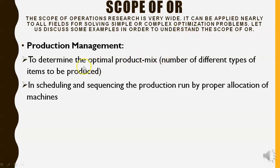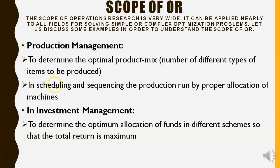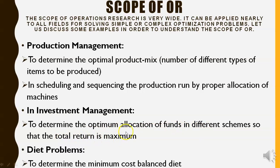In production management, it is used to determine the optimal product mix — that is, the number of different types of items to be produced — and in scheduling and sequencing the production run by proper allocation of machines. In investment management, it is used to determine the optimum allocation of funds in different schemes so that the total return is maximum.